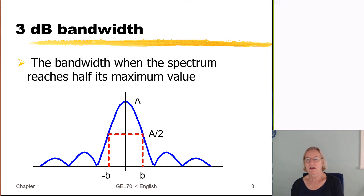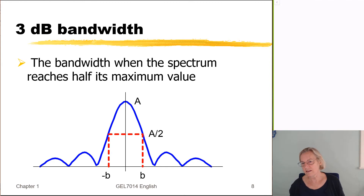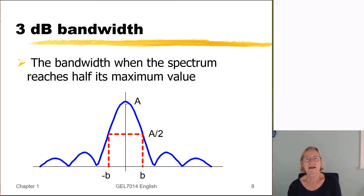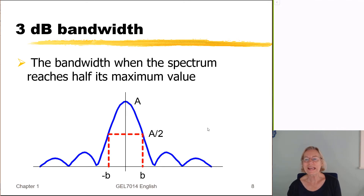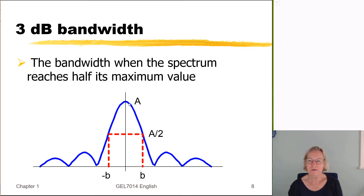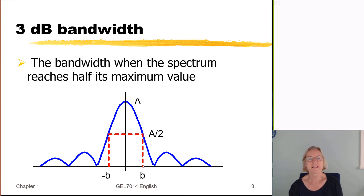For the 3 dB bandwidth, consider a signal whose frequency response is non-zero for arbitrarily large frequencies, making an absolute bandwidth definition impossible. Instead, we look at the amplitude of the signal at DC, which is amplitude A, and find the frequencies at which that amplitude has decreased by one half — to A over 2. Since a factor of 2 in amplitude corresponds to 3 dB, we call this the 3 dB bandwidth.